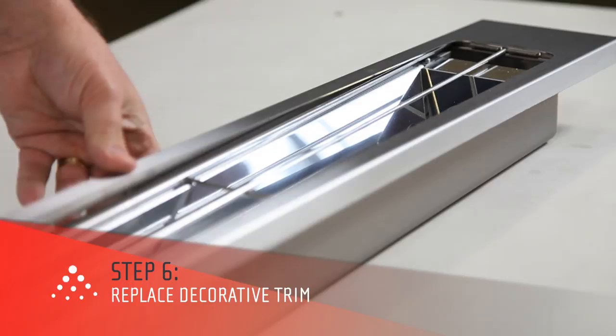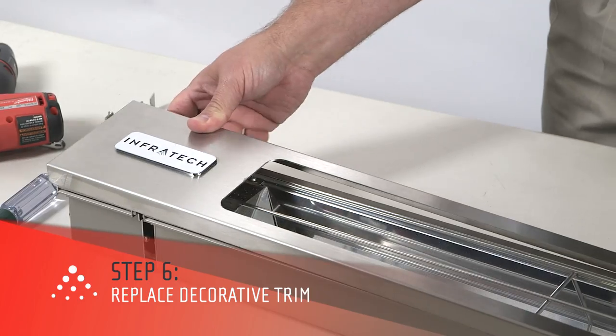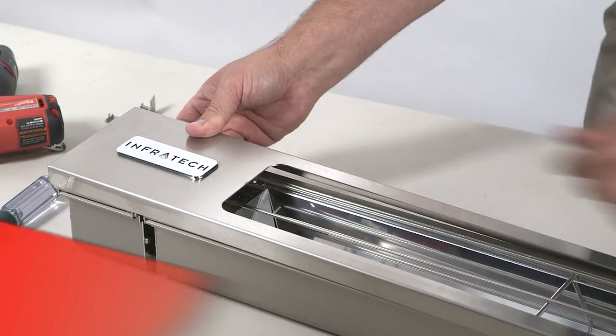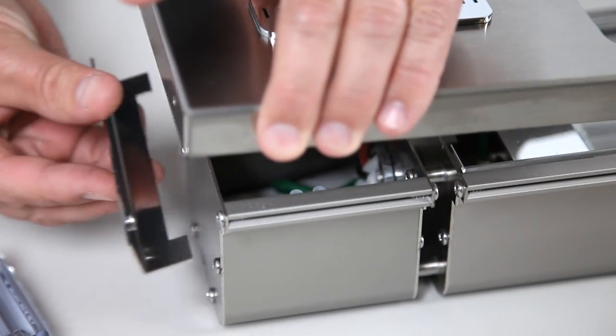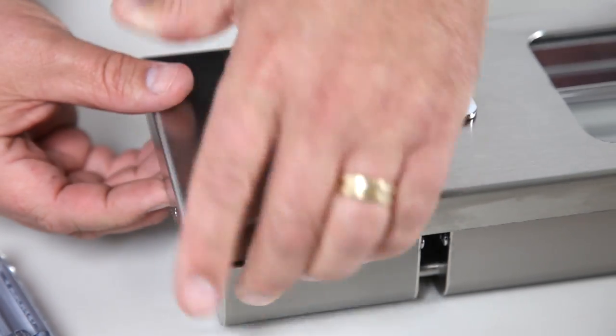Replace the decorative trim by placing it over the unit, then slide it sideways and down to lock it in place. After this, you'll need to replace the housing capture brackets by placing them inside of the trim.